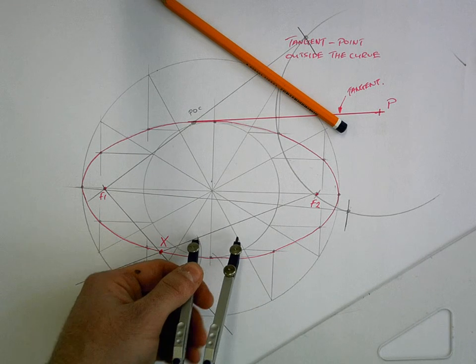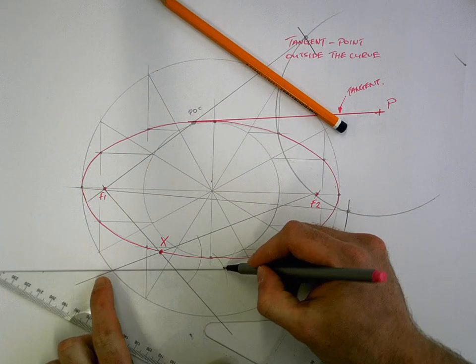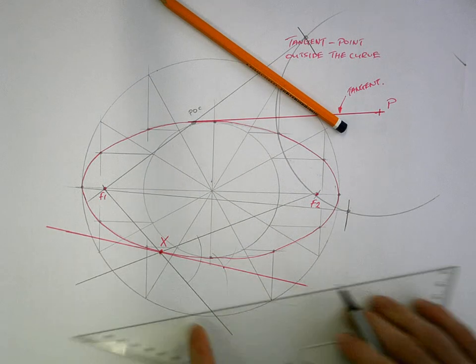And when you bisect it, you pass it through point X. And that's your tangent.